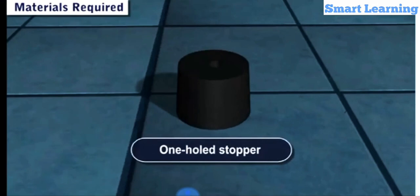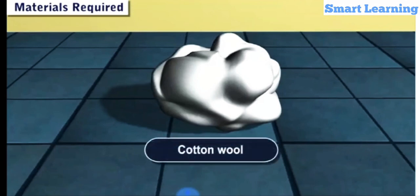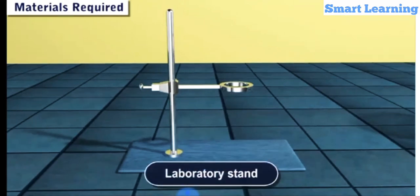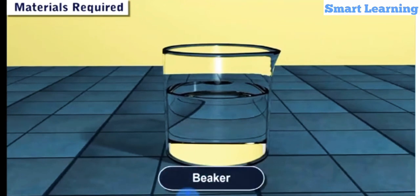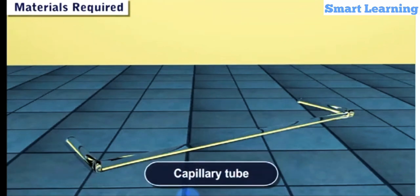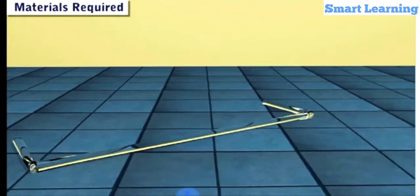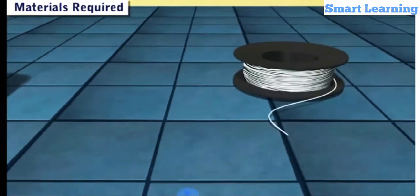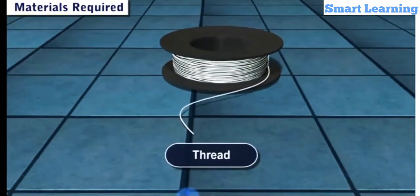One-hole stopper, cotton wool, laboratory stand, beaker, capillary tube, petroleum jelly, and thread.